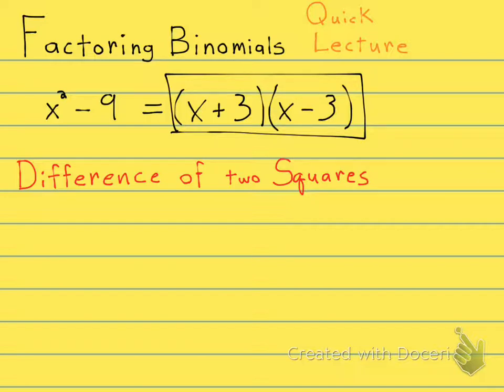Let's look at the difference of two squares for some other binomials. x squared minus 25 is going to be x plus 5, x minus 5.